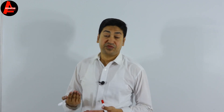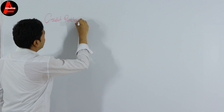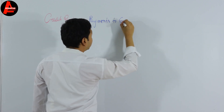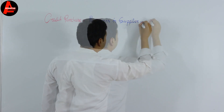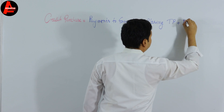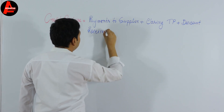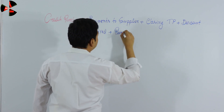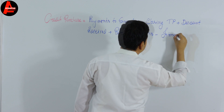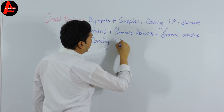The formula to calculate credit purchase is: Credit Purchase = Payments to supplier (trade payables) + Closing trade payables + Discount received + Purchase returns − Interest overdue − Opening trade payables.